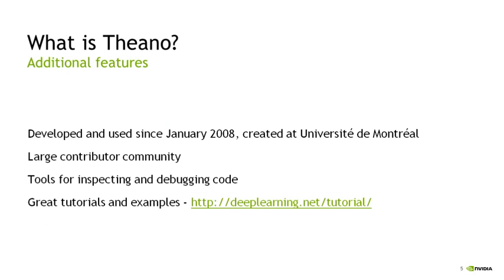A couple of additional notes about Theano at a high level: it's very mature, developed and in use since January 2008, created at the University of Montreal, and it now has a large contributor community. It also has tools for inspecting and debugging code. The error messages Theano produces are different from standard Python error messages, so these tools can be helpful in understanding the root cause. A resource I use a great deal — not only when using Theano but for understanding deep learning algorithms more generally — are the tutorials and examples provided by the deep learning developers at the URLs shown on this chart.